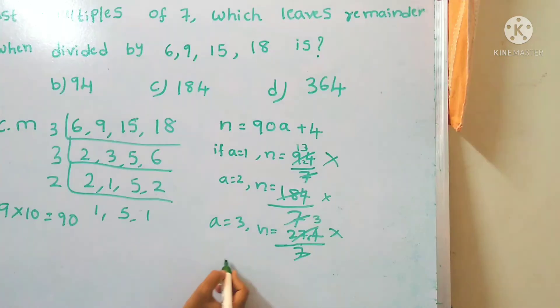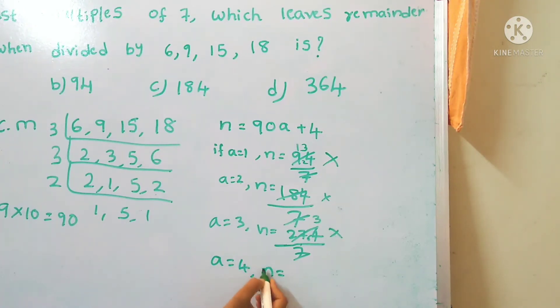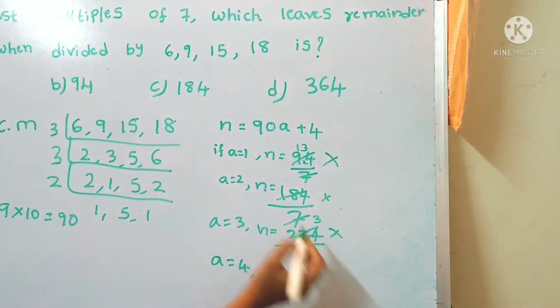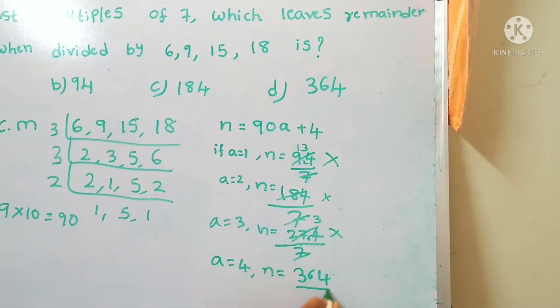Let's take if a equals to 4, then n equals to 9 times 4 is 36 plus 4, 364 divided by 7. 7 times 5 is 35, and 1 remainder, 7 times 2 is 14. 52, it is exactly divisible by 7. So it is the multiple of 7. The number n equals to 364.